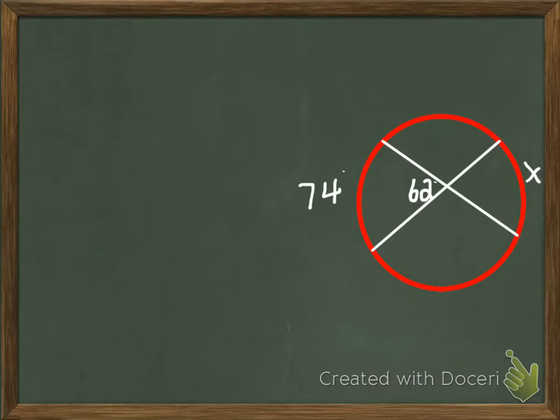So looking at this one, we're going to ask ourselves the same two questions. First, am I looking for angles and arcs or am I looking for lengths? On this one I can immediately see that I am looking for an arc measure. Then I ask, well where's my vertex? My vertex is in the center of the circle.